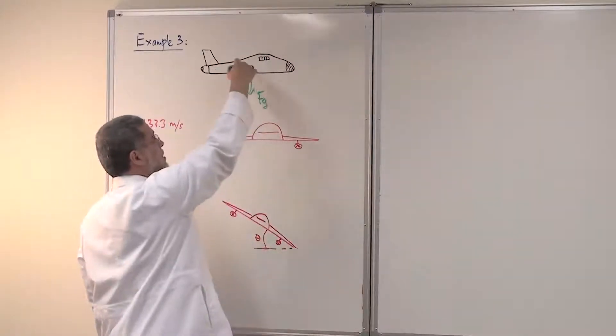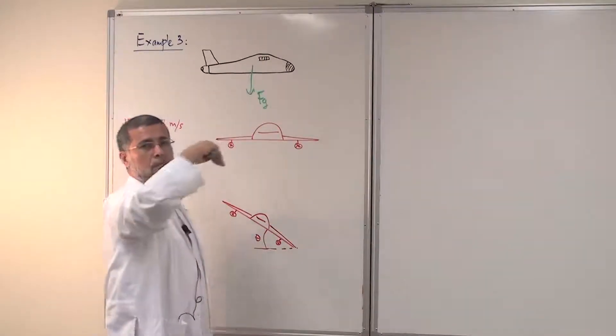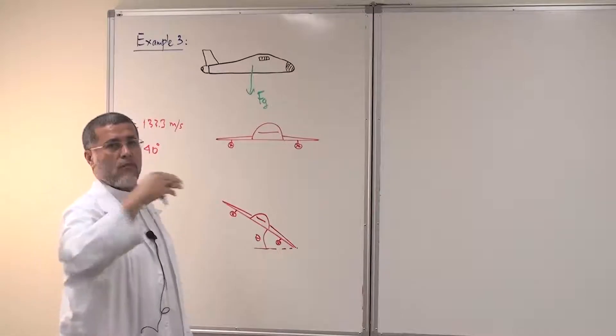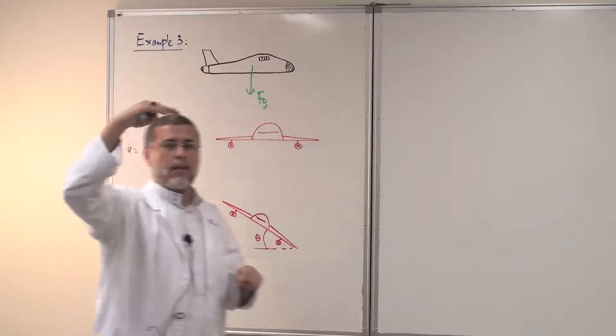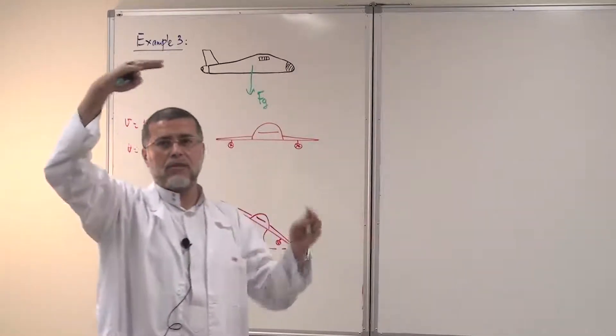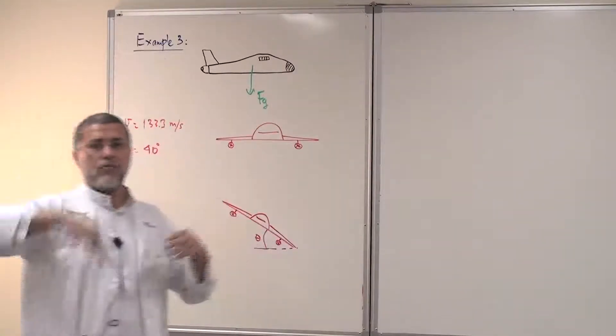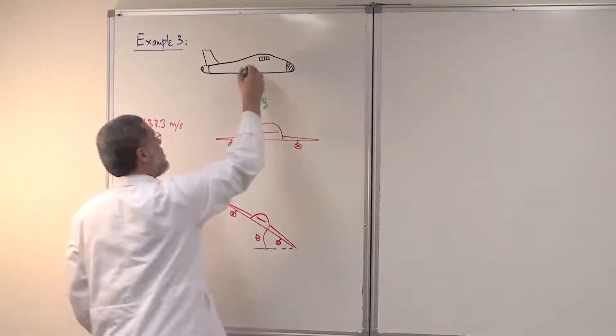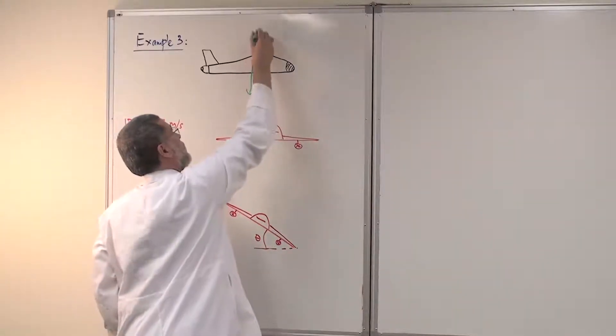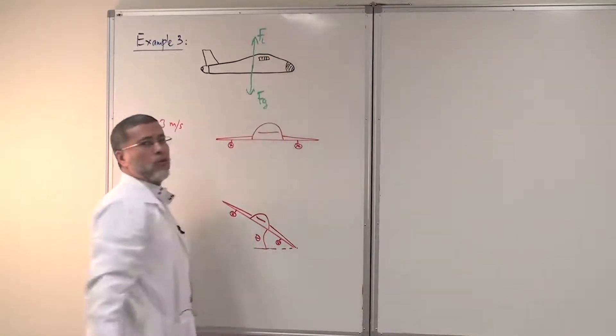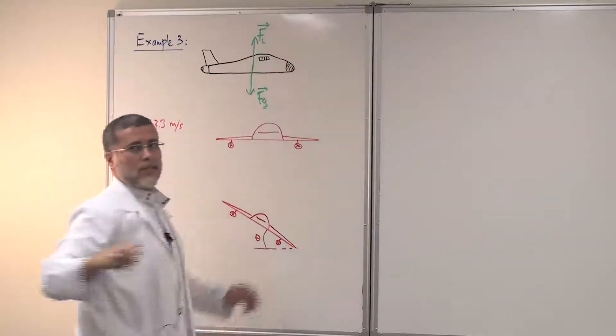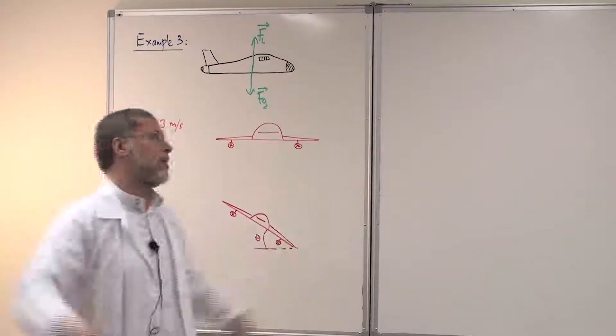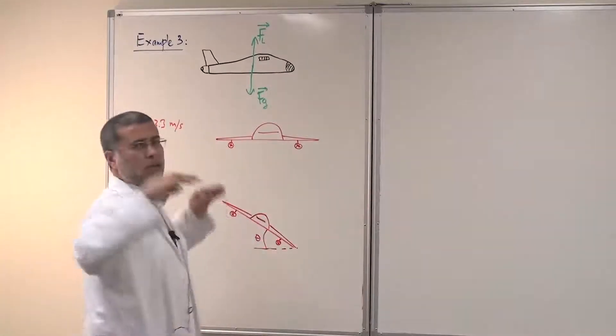Since this airplane is horizontally moving, it means there is another force vertically up which is equal to FG and keeping the airplane at, let's say, 3,000 meters, moving at 3,000 meters above the ground. So the other force here will be F lift. This is the lift force which is keeping the airplane flying horizontally.